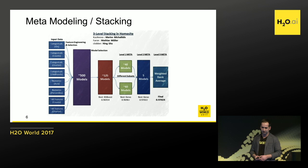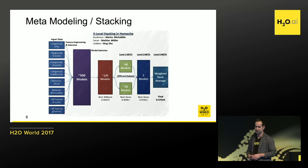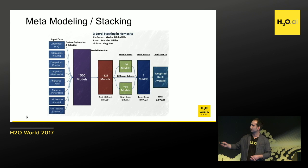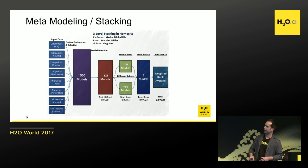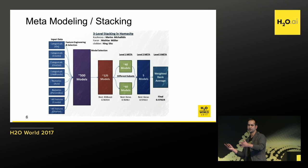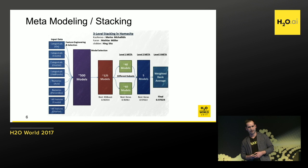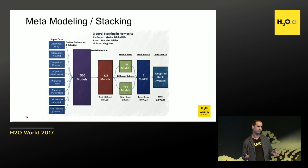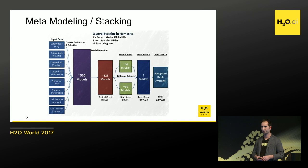If you look at our final solution in a competition called Homesight that our team won — Marius, who will speak right after me, was part of this team — we built really complex solutions. We built around 500 models, stacked them, with a lot of data collection and preprocessing during modeling and validation, leaving many possible sources of mistakes. The worst thing is that sometimes you're not aware of it, and if it's too late — if the model is already deployed — everything can get really messy.